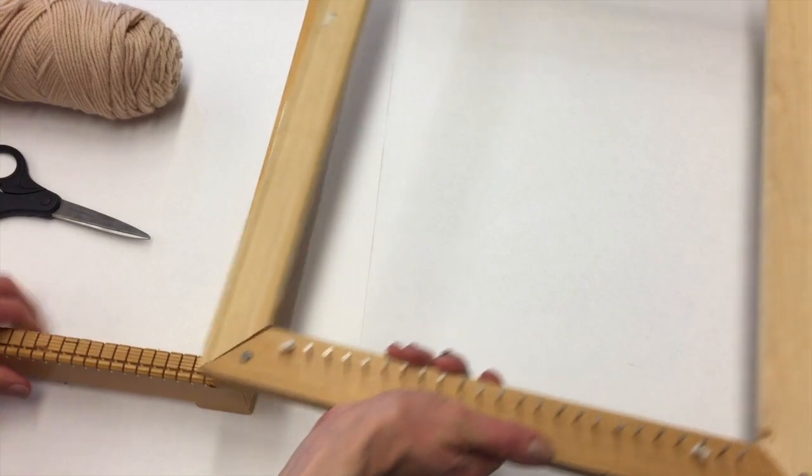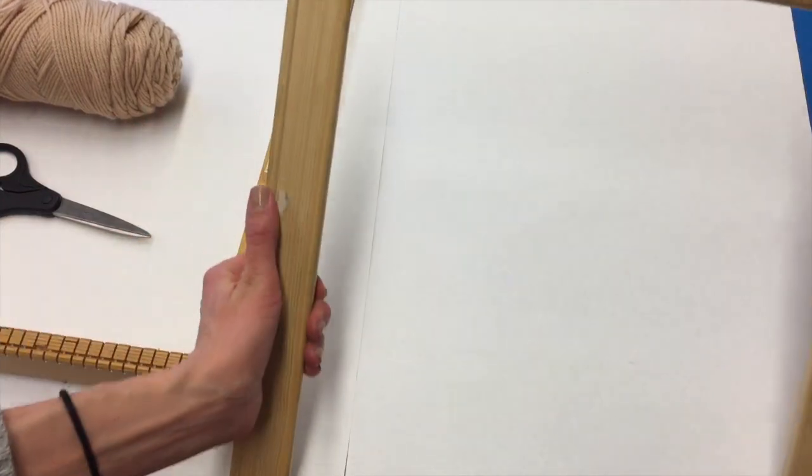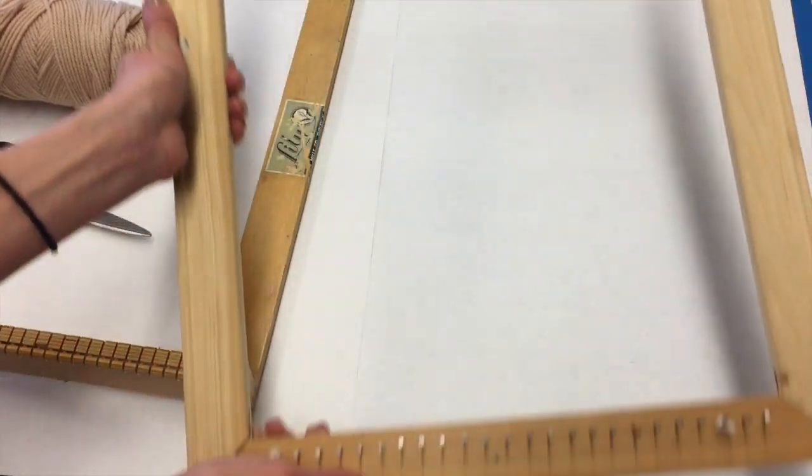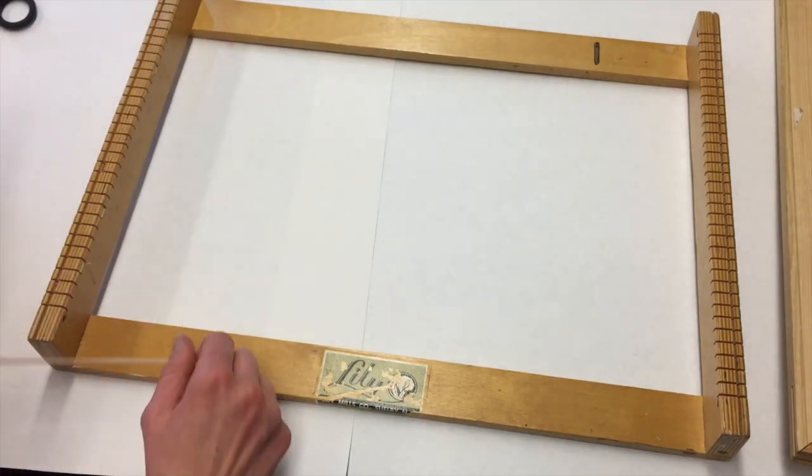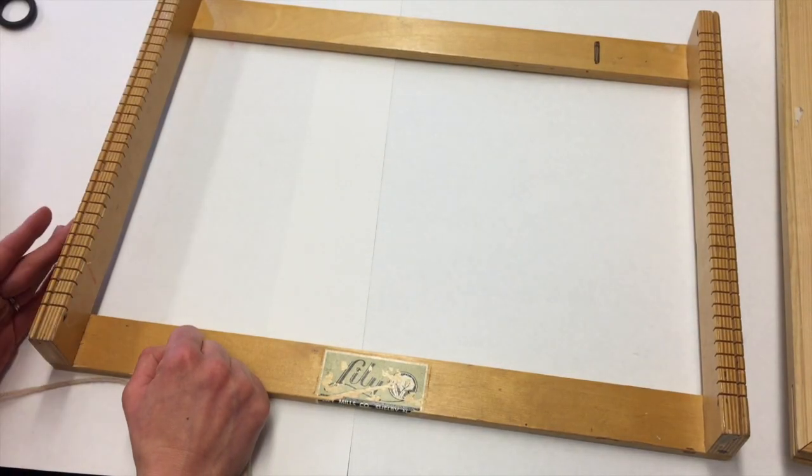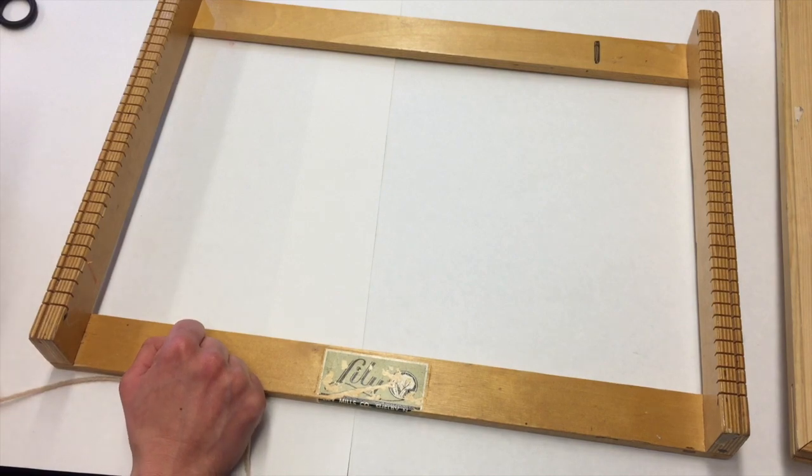I have two types of looms in my classroom. The first one has these nails on the edge that are evenly spaced. This is a homemade loom. The other type I have has notches on it and looks like this. This loom is manufactured specifically for weaving.